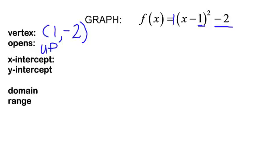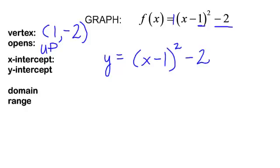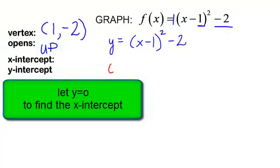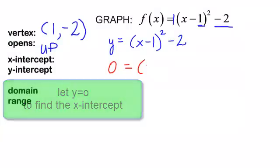Now we need to find the x-intercept and the y-intercept — you will just let the other one equal 0. Remember, f of x is just a fancy way to say y. So y is going to equal x minus 1 squared minus 2. To find the x-intercept, I need to let y equal 0, and I will do a little bit of work here.